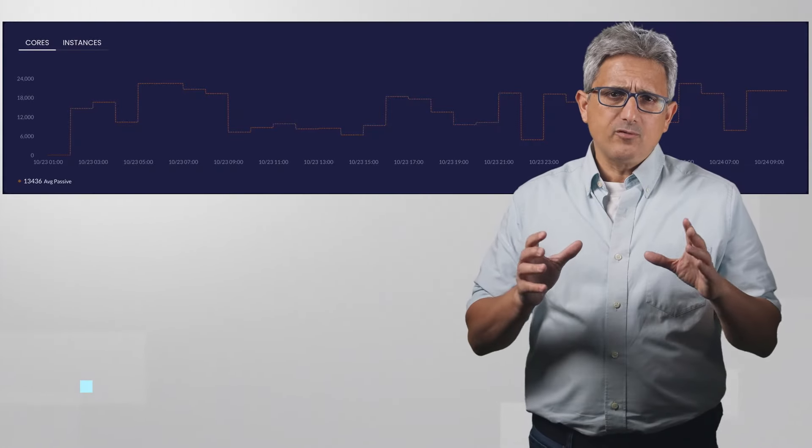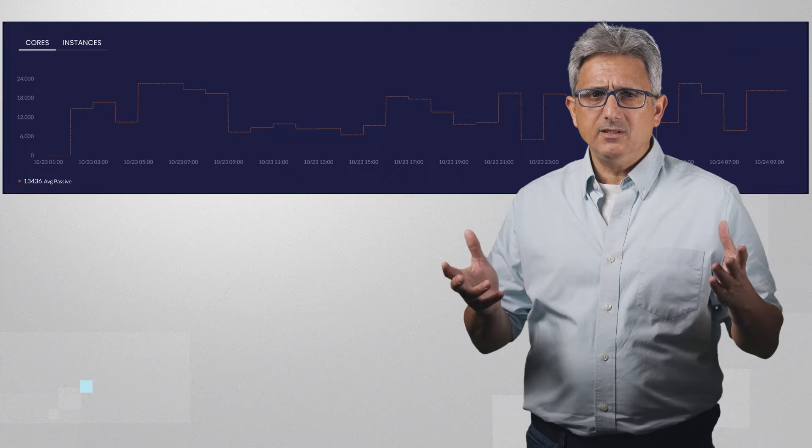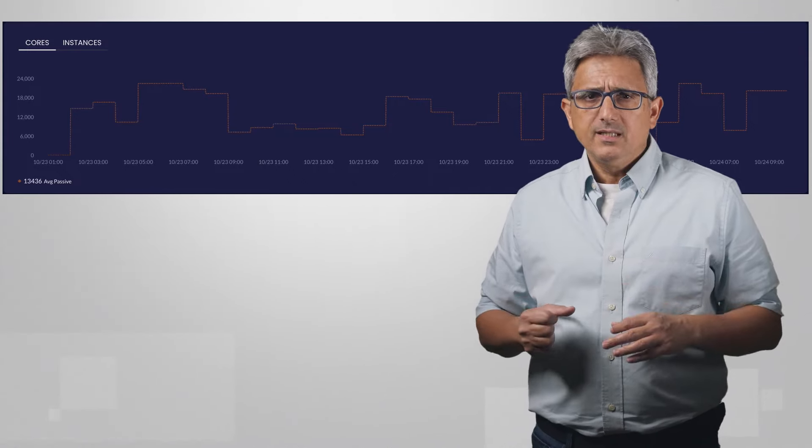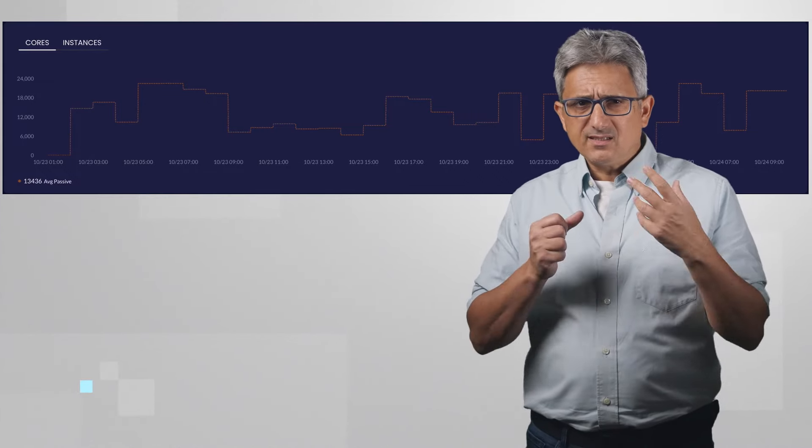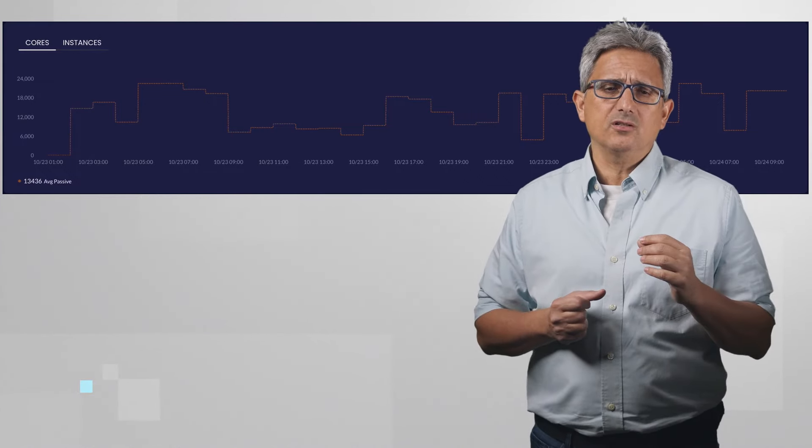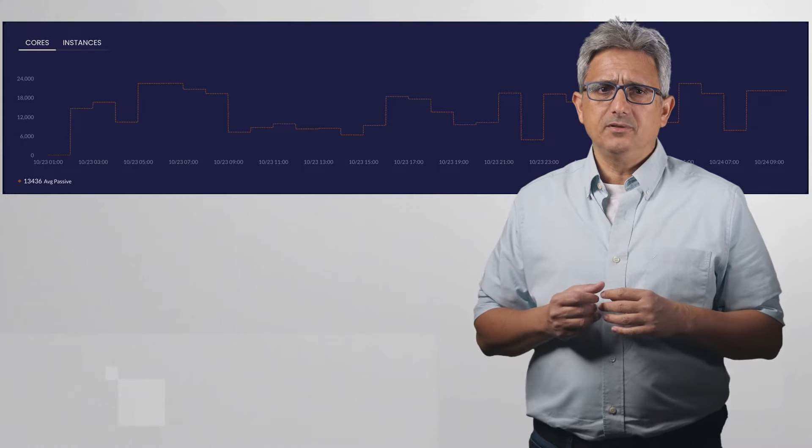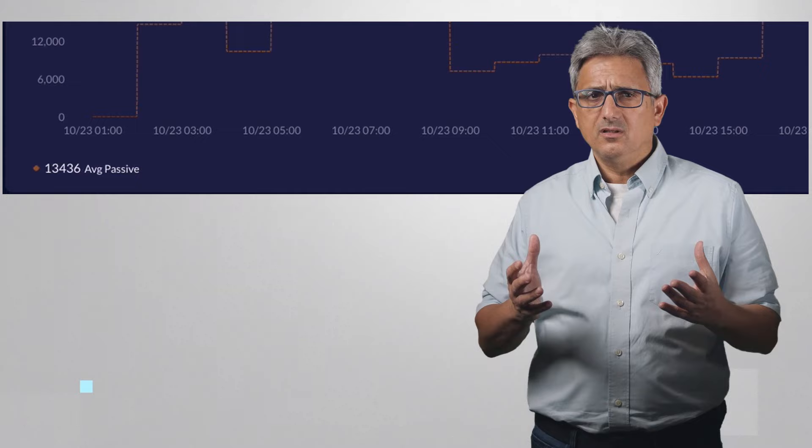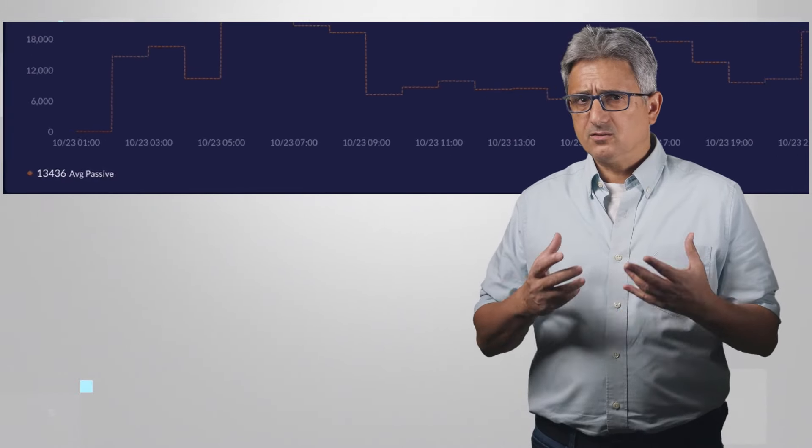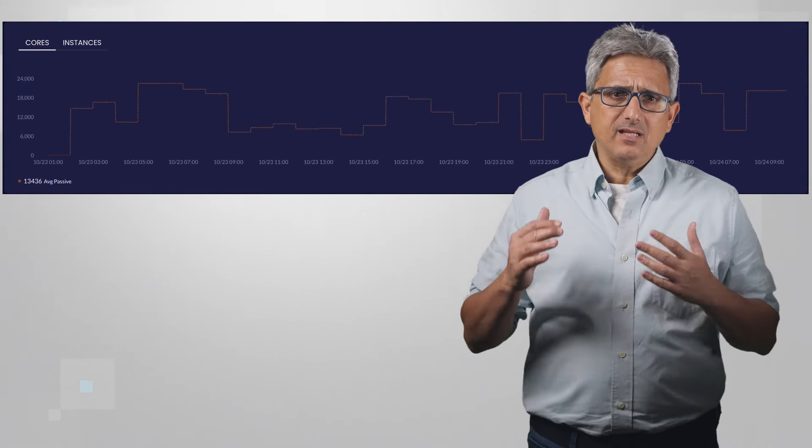The easiest way for me to show it is probably using an example. Here is a typical behavior of a real Granulate customer system. You can see here the system utilization over a two-day period. An average 13,500 cores are being used. Resources are scaling up and down.